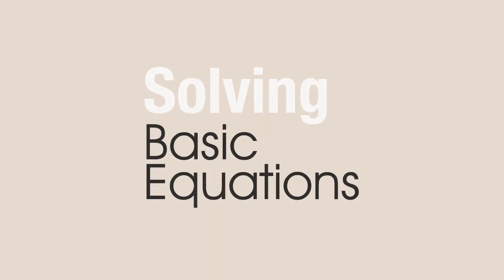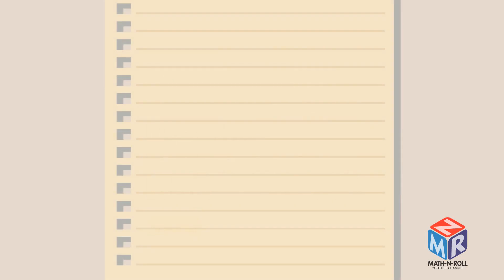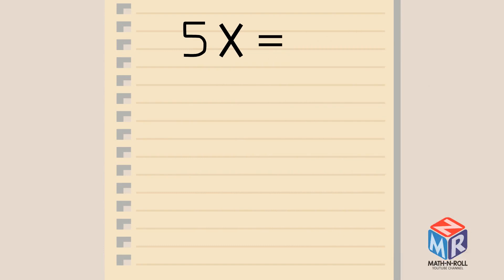Solving Basic Equations, Part 2. 5x equals 30 — this means 5 times x equals 30. Let's solve this equation.